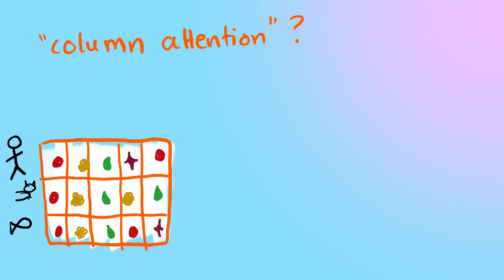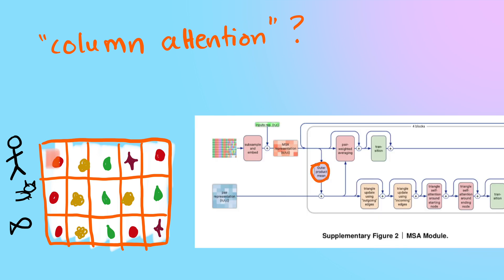But what I was confused about was what happened to the column attention for the MSA. So the column attention used to be what dealt with the evolutionary data, because it would look at a particular spot in a protein and then compare it to what it looked like in different proteins. But now there isn't an attention mechanism that does this.